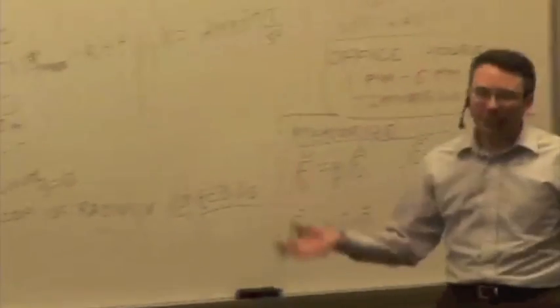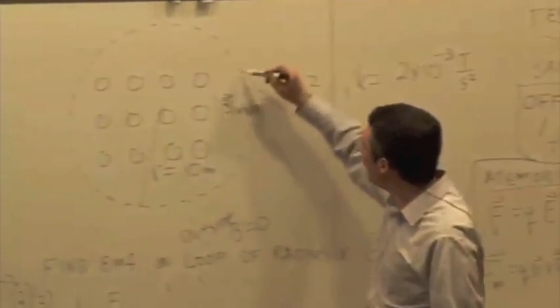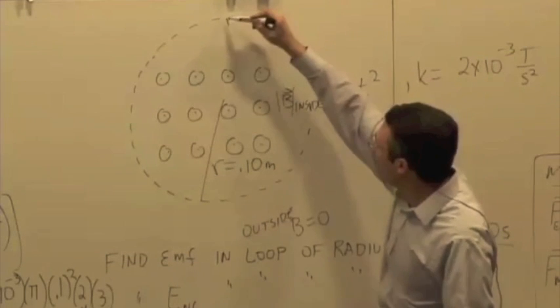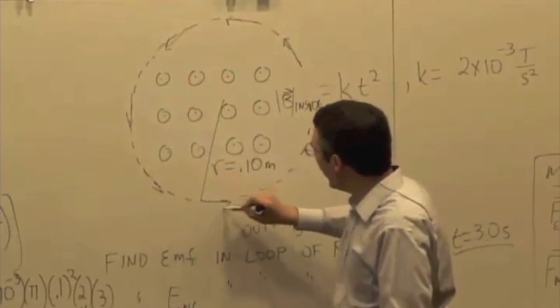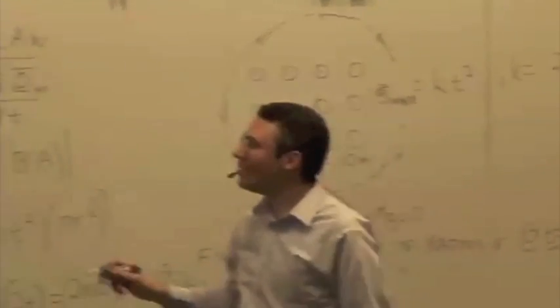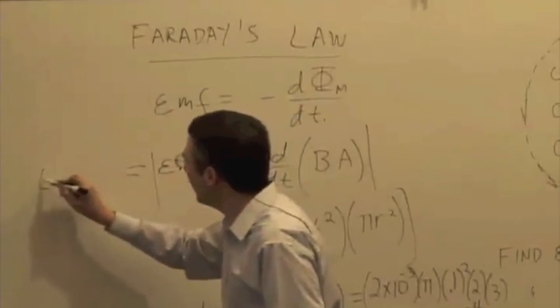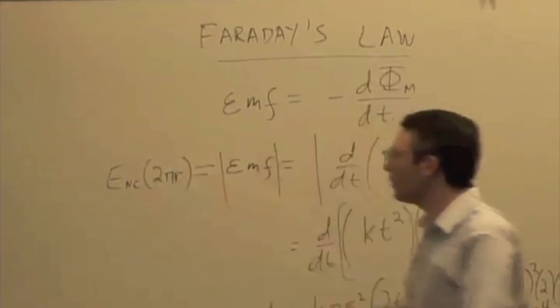And then if we wanted to find the electric field, again just based on the symmetry, we would assume that the electric field is pointing in this curly pattern, uniform everywhere. We have a circular path, so this is just going to be ENC times 2π r, and you can solve for the electric field.